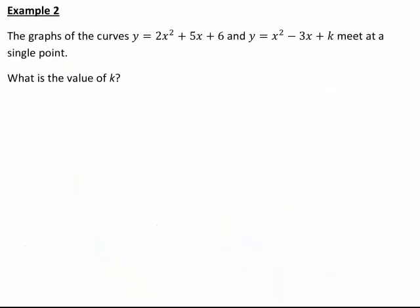Let's have a look at a second example that's just a little bit different. Suppose the graphs of the curves y equals 2x squared plus 5x plus 6 and y equals x squared minus 3x plus k meet in a single point. What is the value of k? How would we approach this problem?